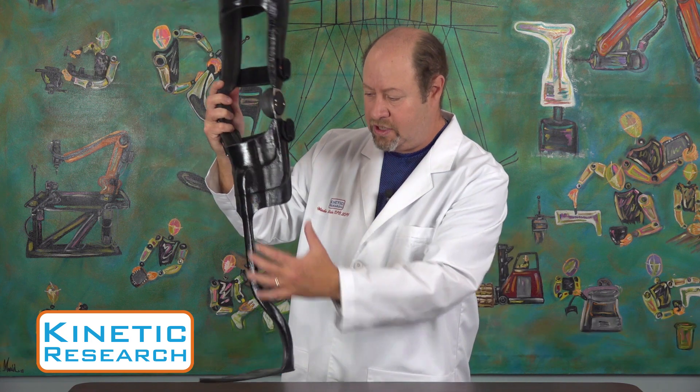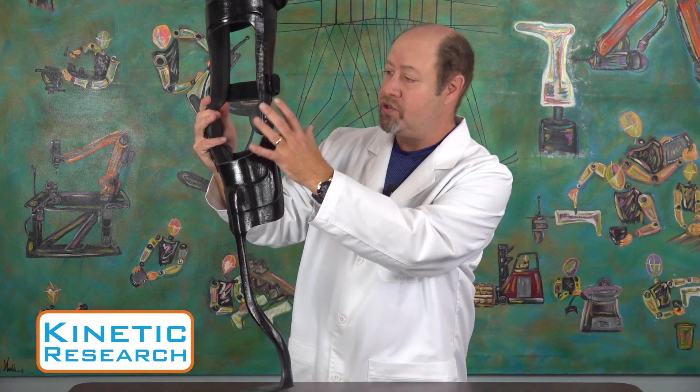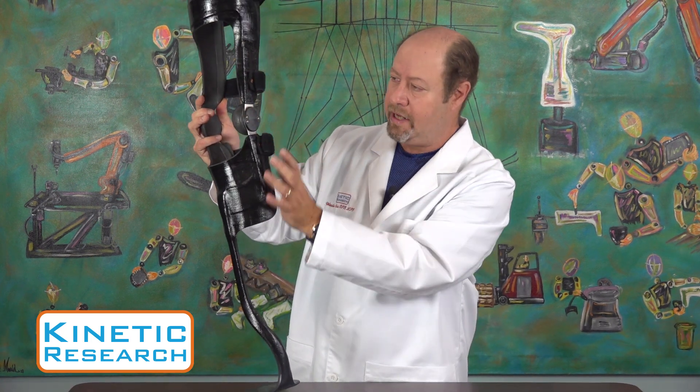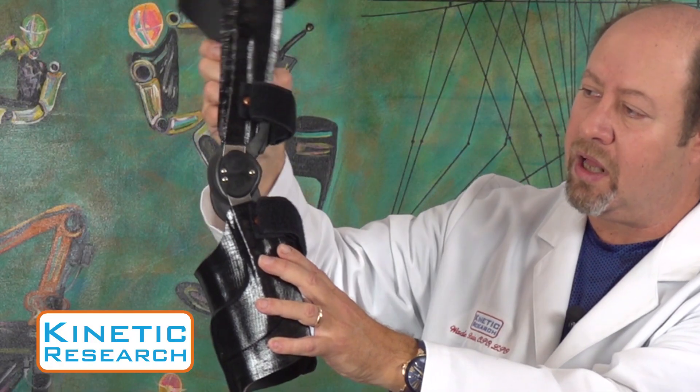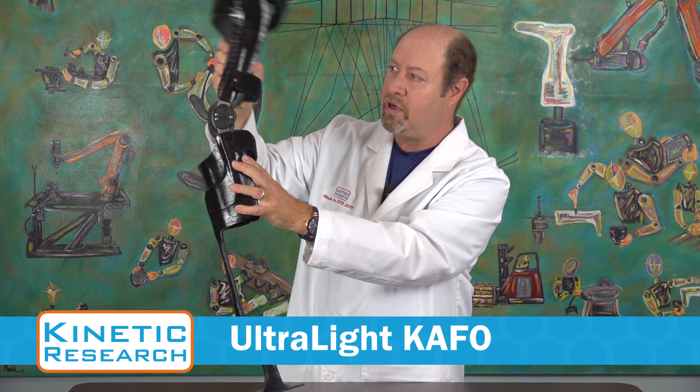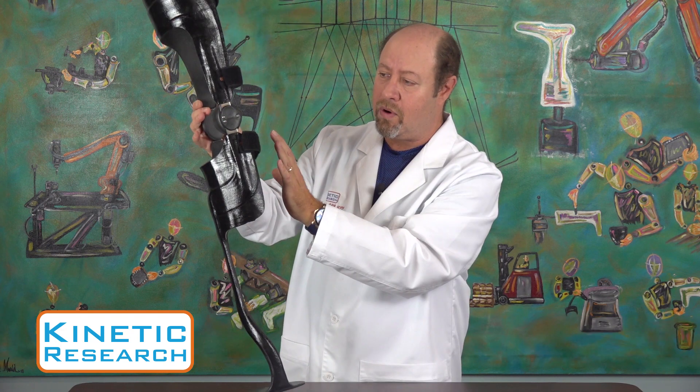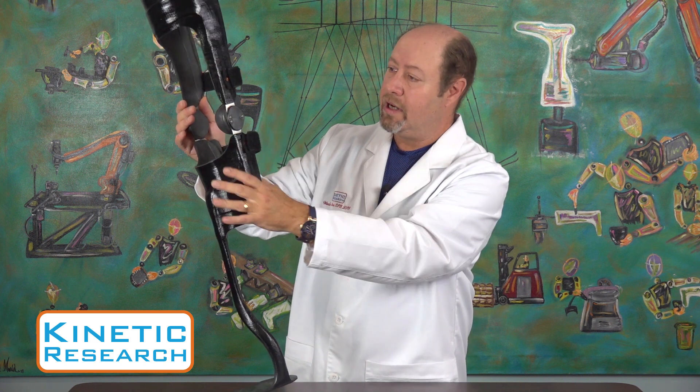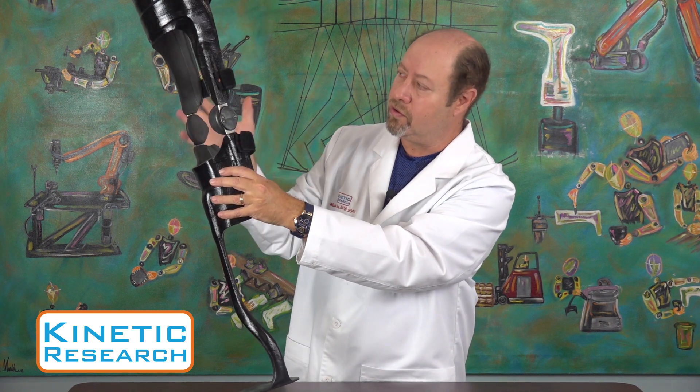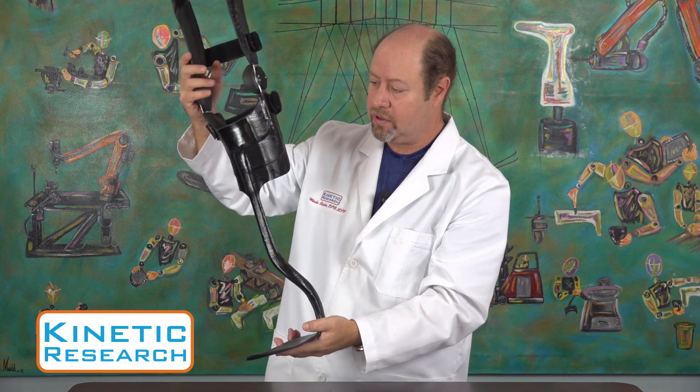This is one of our ultralight CAFOs. It's a Noodle TA AFO, which directly integrates into our femoral component using our knee spikes, our polycentric knee joint, which gives us ultralight qualities, but also great rotational control plus extension control for knee hyperextension.